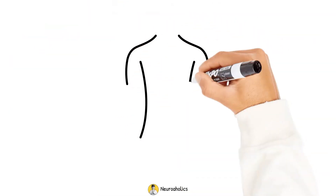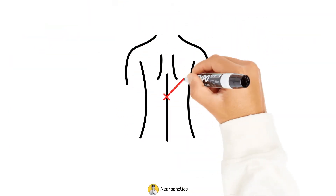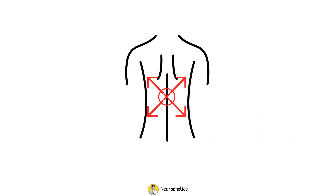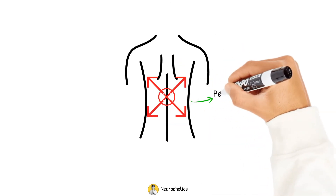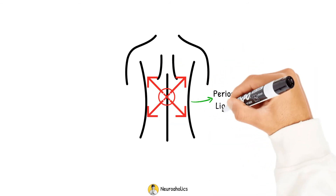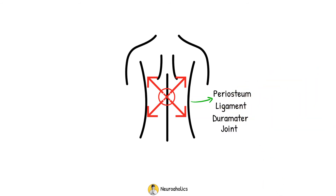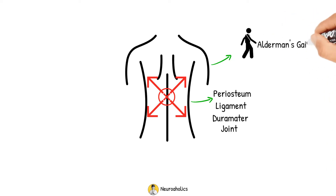Muscle spasms will spread outside the affected region. The pain is caused by irritation of pain-sensitive structures such as periosteum, ligament, dura mater, and joint. In certain cases, the patient can exhibit a stereotypical upright stance and alderman's gait, in which the patient moves with quick, slow strides to prevent jarring of the spine.